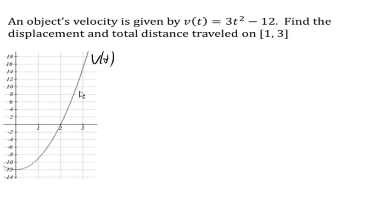From 1 to 3, during that first second, my velocity is negative, which means I'm moving backwards. During that next second, my velocity is positive, so I'm moving forwards.